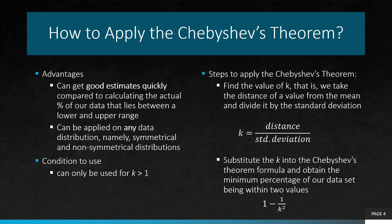Now let's move on to the steps on how to apply Chebyshev's theorem. First of all, we need to find the value of k. k represents the distance of a value from the mean in terms of standard deviation, not in regular units. To find k, we simply divide the distance with the standard deviation. Once we have k, we substitute it into the formula 1 minus 1 over k squared and obtain the minimum percentage of our data set between two values.